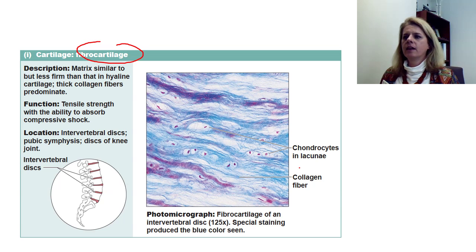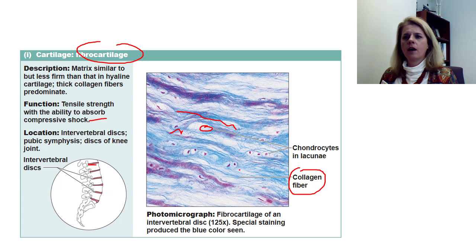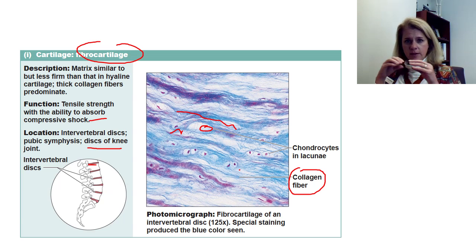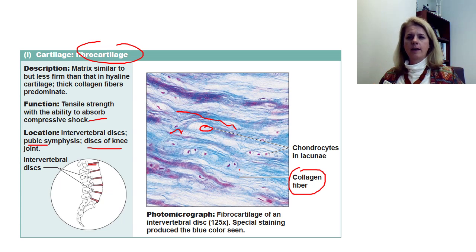Fibrocartilage — the name 'fibro' tells you it has a lot of collagen, making it really, really strong. You have the little lacunae with chondrocytes inside and a matrix with lots and lots of collagen fibers. Fibrocartilage is very good at absorbing shock. You find it between your vertebrae, between your femur and tibia as the discs of the knee — a fibrocartilaginous disc that absorbs shock when you run. Also, the pubic symphysis, a piece of fibrocartilage that holds your two hip bones together, supporting a lot of weight.